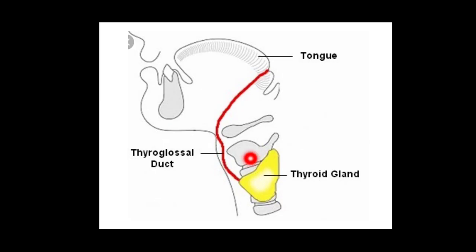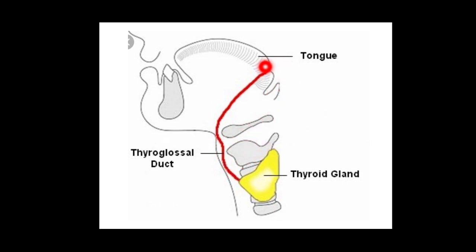This is another diagram representing the same anatomy. This is the cut section of the mandible, this is the hyoid bone, and this is the thyroid cartilage. You can see the foramen cecum and the tract going down and entering up to the isthmus of the thyroid gland.